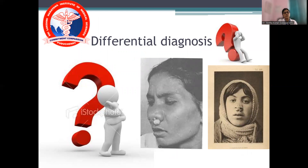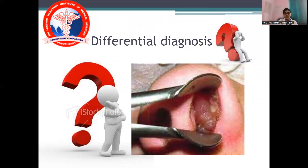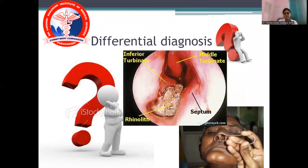Important differential diagnoses: primary atrophic rhinitis is usually idiopathic, from Klebsiella ozaenae, or autoimmune disease. Secondary atrophic rhinitis is from chronic granulomatous diseases like rhinoscleroma, syphilis, leprosy, SLE, or Wegener's granulomatosis. You have to rule out all these by doing a battery of laboratory, radiological, and histopathological tests. You may also confuse atrophic rhinitis with rhinosclerosis, or with a long-standing rhinolith or foreign body in the nose.